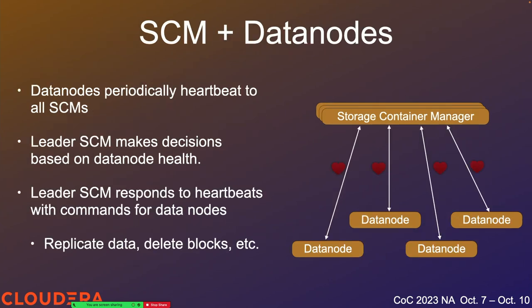Data nodes periodically send messages to SCM called heartbeats, to let SCM know they're still alive and well. Data nodes also attach reports to these heartbeats — things like what containers they currently have, how much storage space is available, and their progress on various commands SCM has sent. SCM has a heads-up view of the state of all data nodes and can use this to make decisions about which containers may need to be replicated or deleted.